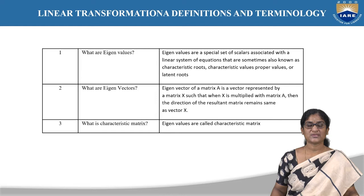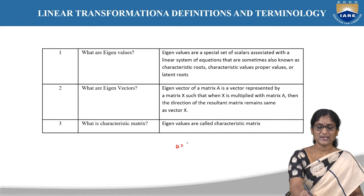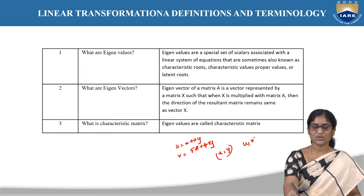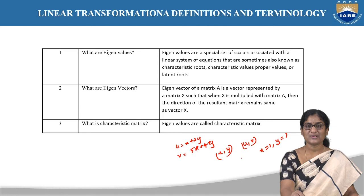Next, going to eigenvectors. Eigenvectors of a matrix x is a vector represented by a matrix x such that when x is multiplied with matrix A, the direction of the resultant vector remains the same. Suppose we have two linear equations: u = x + 2y and v = x + 4y. If you substitute x and y such that u and v are transformed back — for example, if x = 1 and y = −1 — and you get back the same x and y values, then those vectors are eigenvectors.